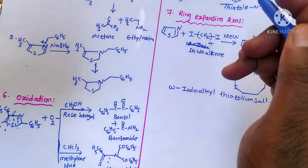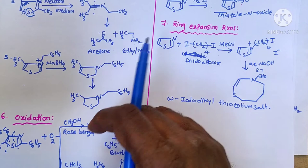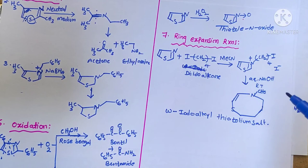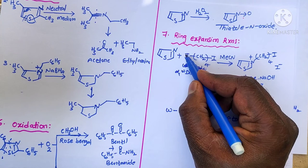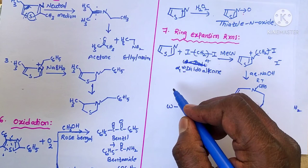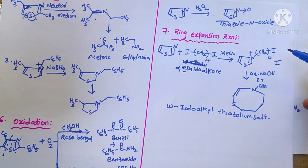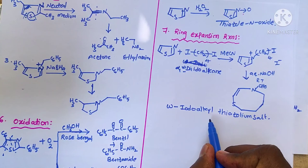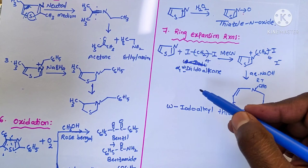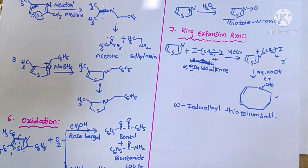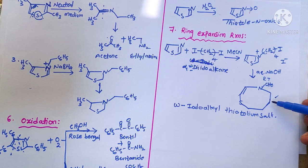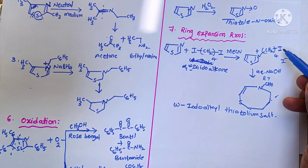When thiazole is treated with hydrogen peroxide we get thiazole N-oxide. Thiazole also shows ring expansion reactions: when treated with alpha,omega-diiodoalkene — where iodine is attached to the first and last carbon — first we get an N-substituted omega-iodoalkyl thiazolium salt, and then ring expansion takes place. Counting 1, 2, 3, 4 carbons, the ring expands and this last carbon becomes attached to the sulfur.